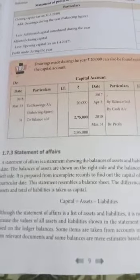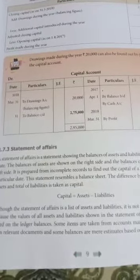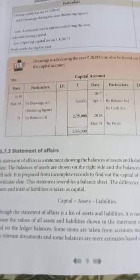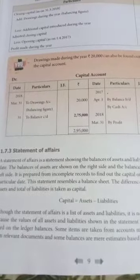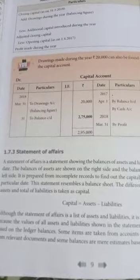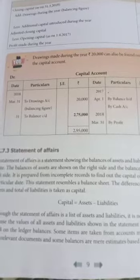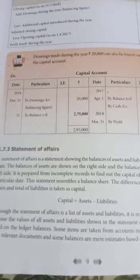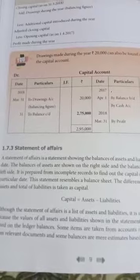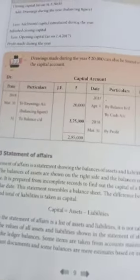If you have a business, you will have incomplete records. What do we do? We find the capital of the business. What gives you capital is your balance sheet — the total assets minus total liabilities. The difference between assets and total liabilities is taken as capital. Capital is equal to assets minus liabilities.